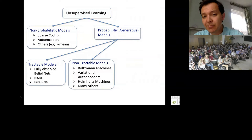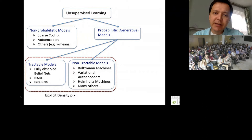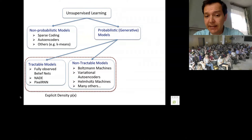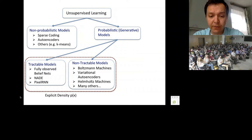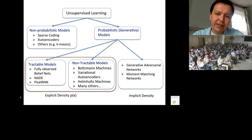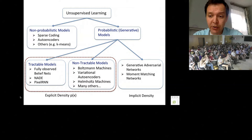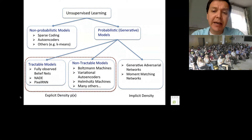Tractability here means we can actually compute the probability of the input data and tractably evaluate these models. There is also a class of non-tractable models — Boltzmann machines, variational autoencoders, Helmholtz machines — which you can think of as graphical models and multi-layered graphical models. And there's another class — generative adversarial networks and moment matching networks — which have implicit density; they only require sampling. GANs will be covered in a separate class.